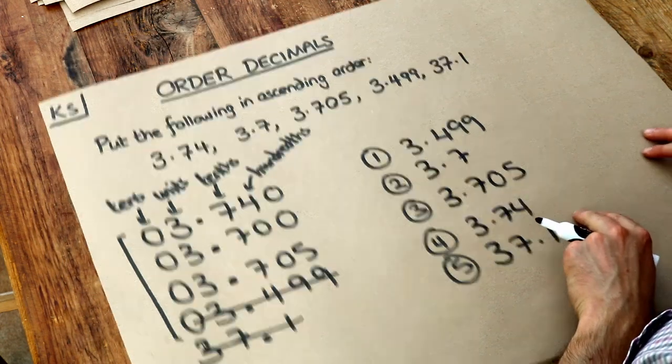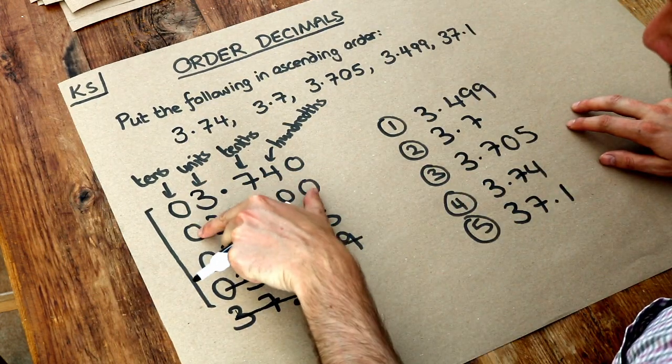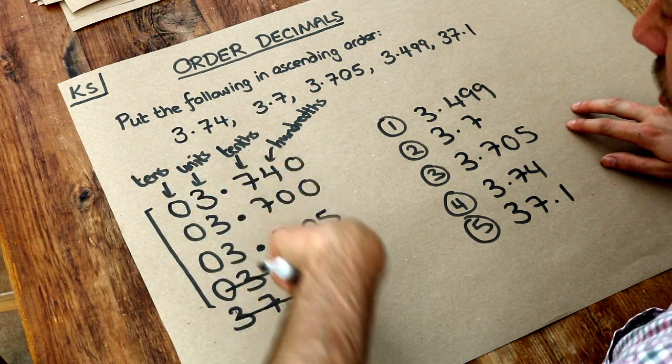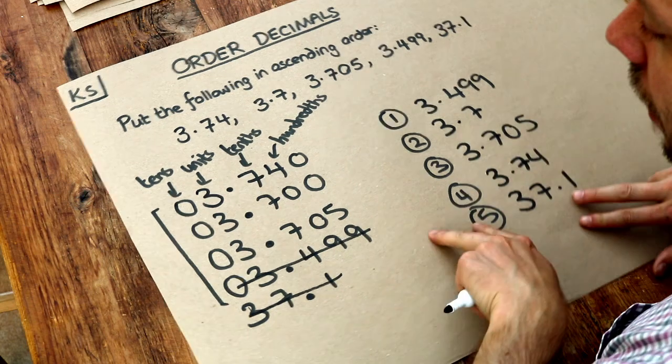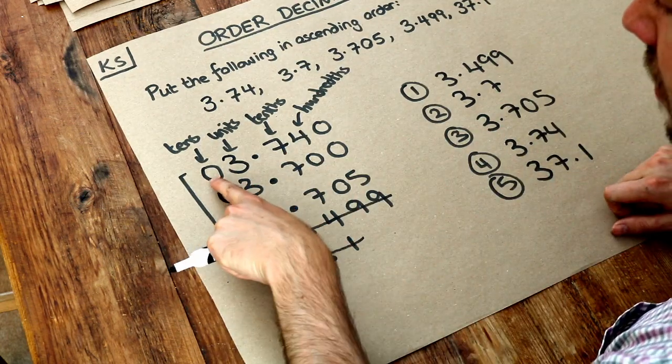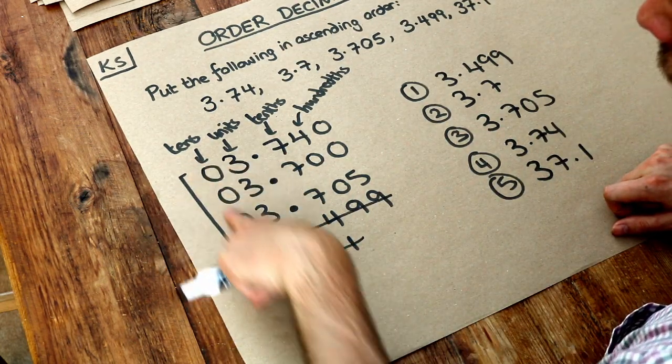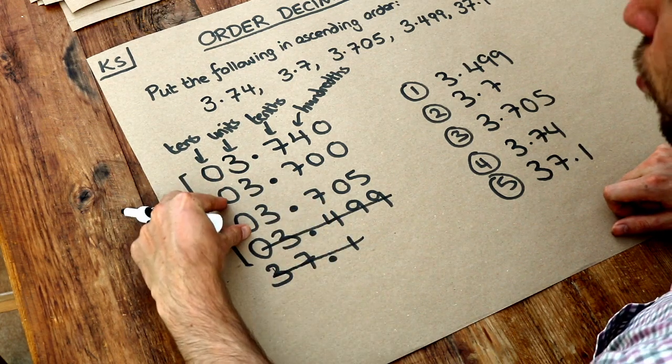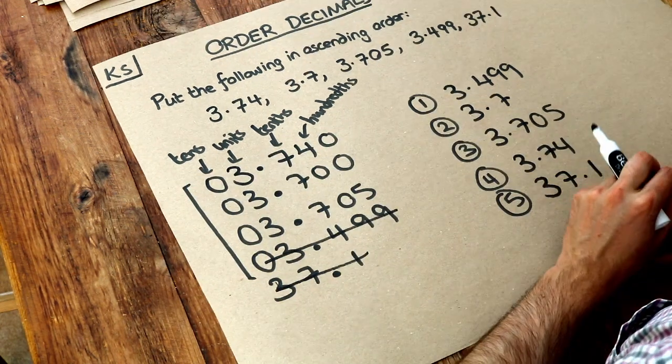So just to repeat the strategy, we write the numbers where we line up the digits so they have the same place value in each column. Then we always look at the place value with the highest worth first and look which one is the smallest and that goes first. If it's a draw we have to look at the next digit.